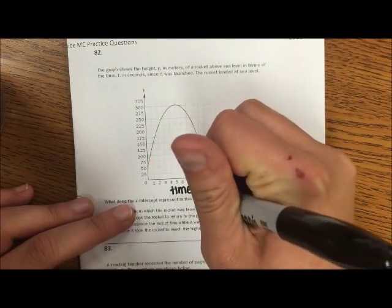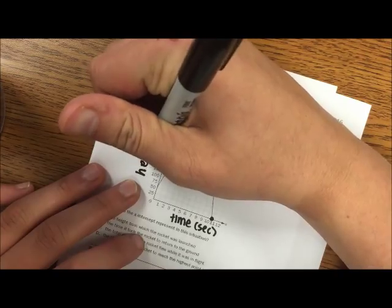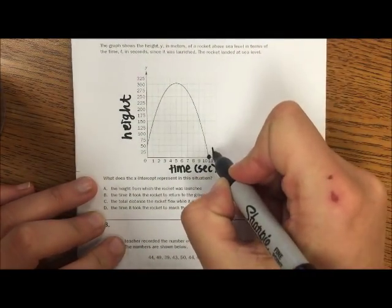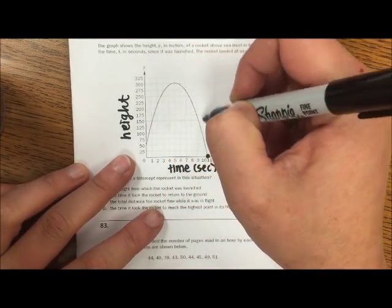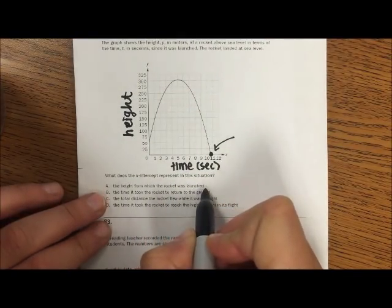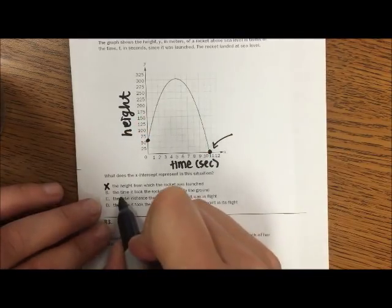So here, and then this is time in seconds and this is height. So what is the x-intercept? What does this point represent? Well, here's my rocket. It shoots off, it shoots off, it reaches, and then it lands. Right, it's landing.